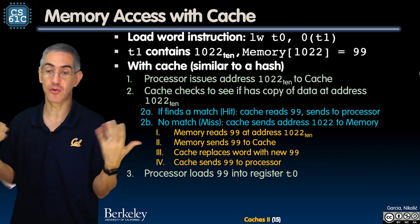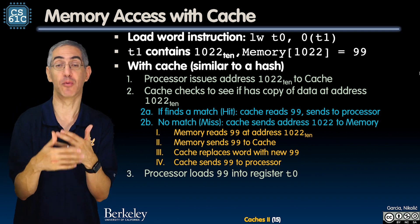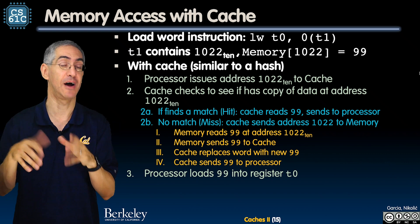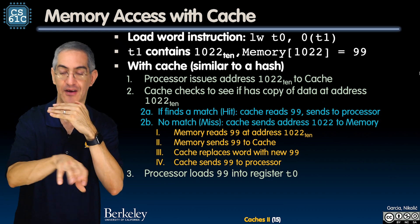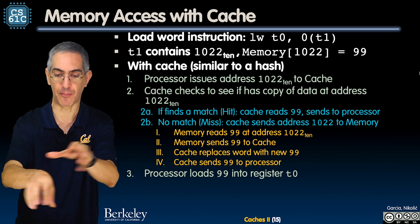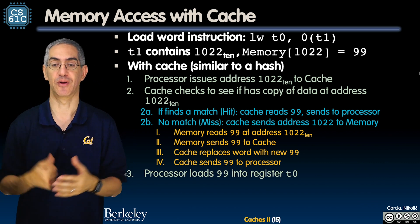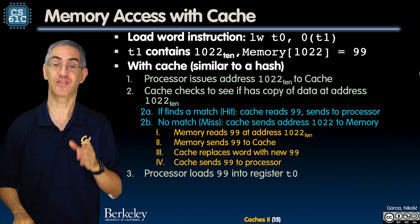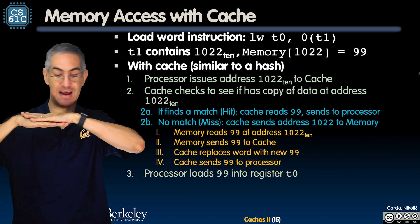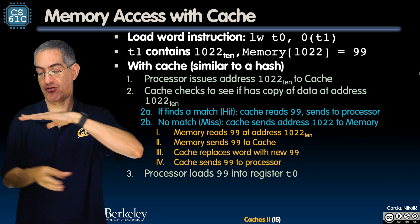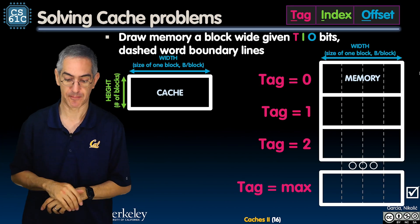From the processor's point of view, it didn't need to know. It just asked for the data — if it was there, it returned much faster. If not, magic things happen behind the scenes as the cache updates itself. Finally, the processor gets 99 and loads it into T0. Abstractly, the process is the same.